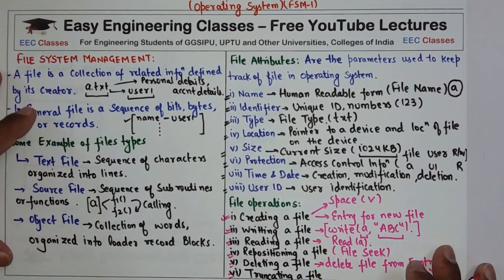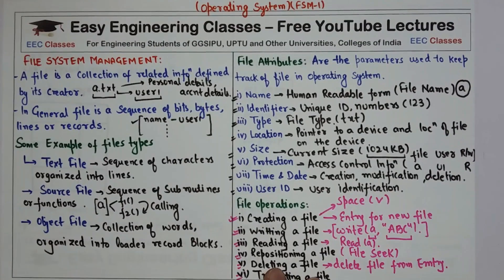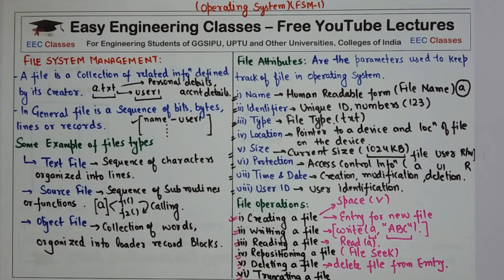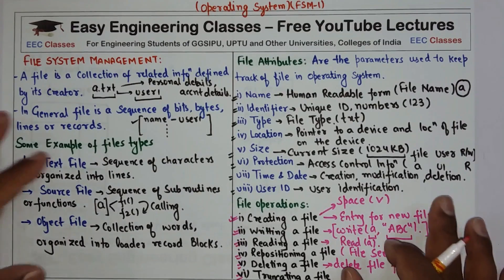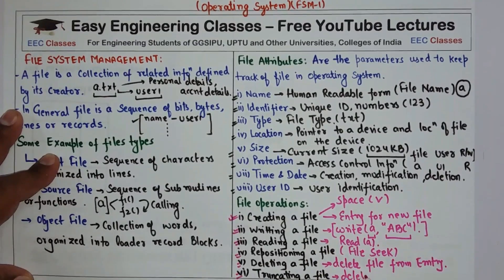The last operation is truncating a file. Truncating means that the user may want to erase only the contents of the file but still keep the attributes intact. So instead of deleting the file entirely, you truncate it — truncating means deleting only the contents while preserving the file's attributes.